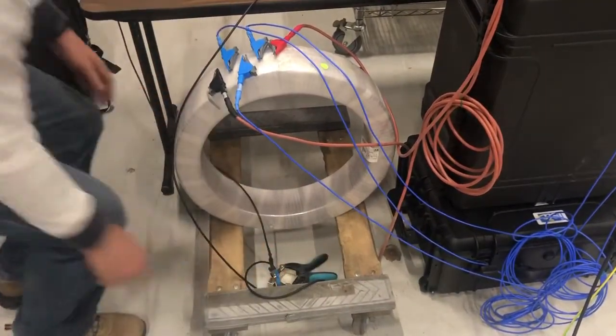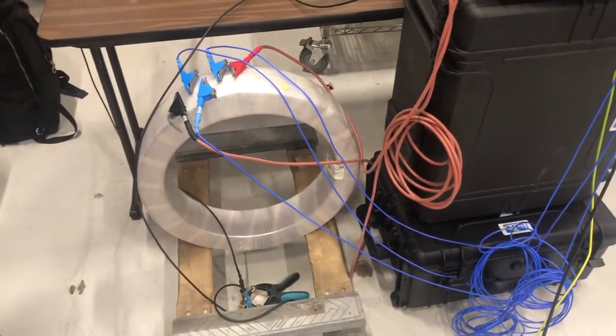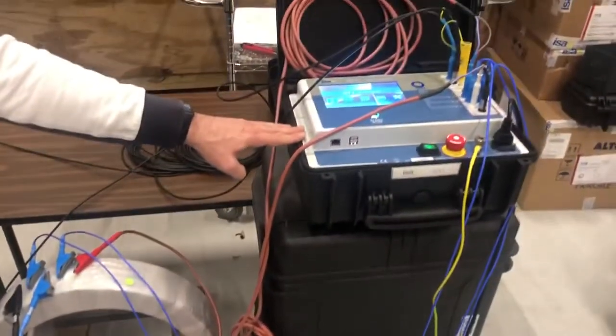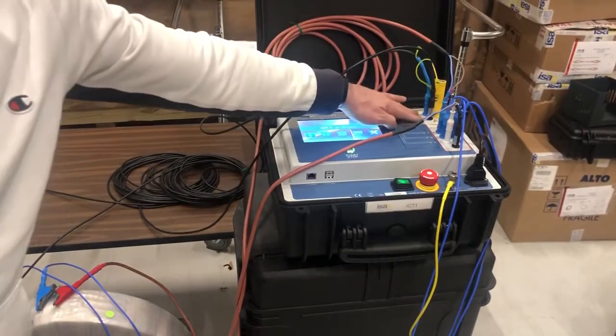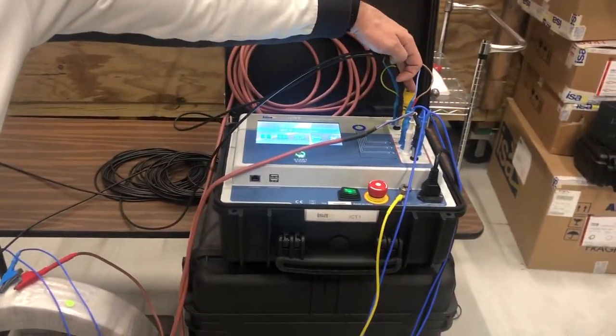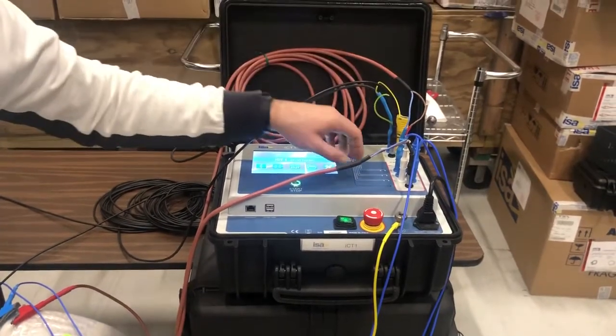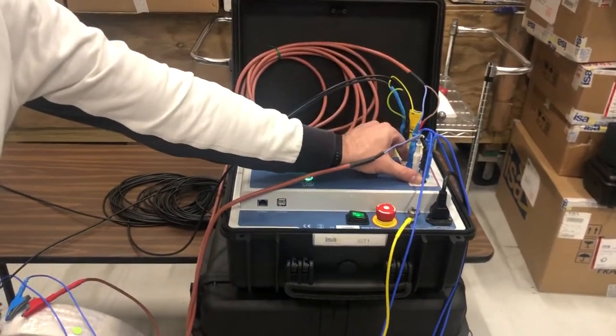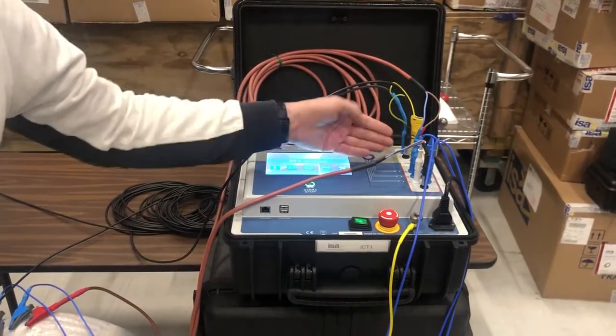And that's how you connect your CT with your ICT-1. Once again, the primary side which we have just connected, which has grounded, shielded cables, and the extremes of the secondary side which have two connectors here.